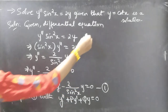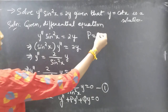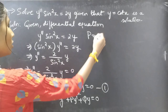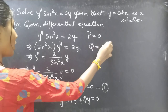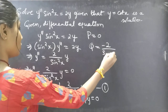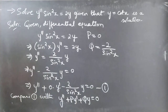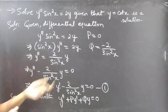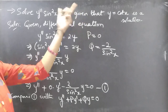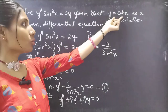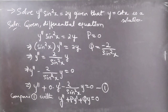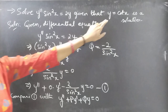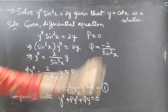By comparing these two equations, we get P = 0 and Q = −2/sin²x. Now, in the problem we are already given that y = cot x is a solution, so we won't need to find the complementary function from scratch. We are already given y = cot x as a solution.